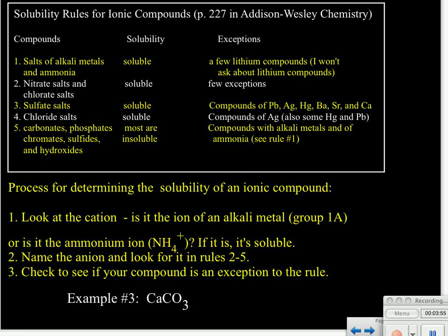Our third example is CaCO₃. We look at the cation first — Ca is calcium, a 2A metal, not covered by rule number one. So we look at the anion, which is CO₃²⁻, carbonate. Rule number five deals with carbonates and says most are insoluble. The only exceptions go back to rule one — alkali metals and ammonium. Therefore, anything under rule five that's not an alkali metal or ammonium salt will be insoluble.